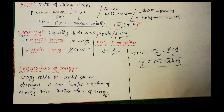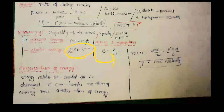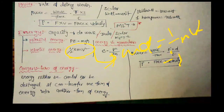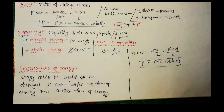Now let's look at the change in kinetic energy. The work-energy theorem states that work done equals the change in kinetic energy. Change of kinetic energy = ½mv² − ½mu².